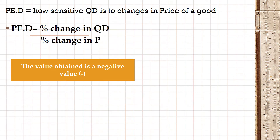Whatever value is obtained, it is regarded as a negative value, but we don't mention the negative sign with it. That is because of the law of demand. The law of demand says there is an inverse relationship between price and quantity demanded. So we assume the value is negative, but we do not put the sign with it.